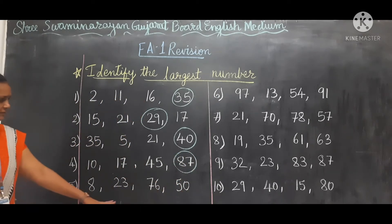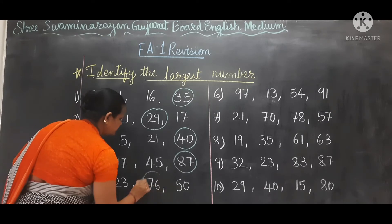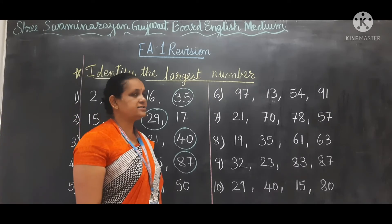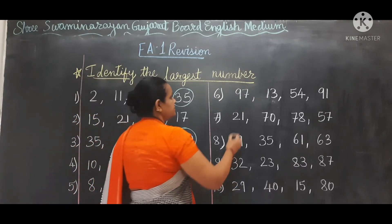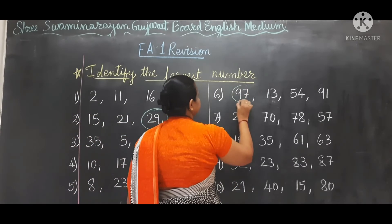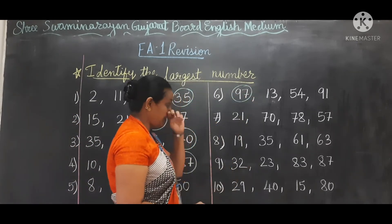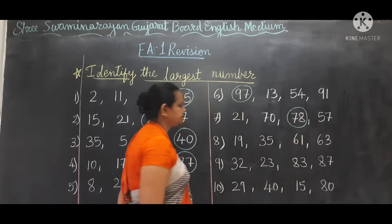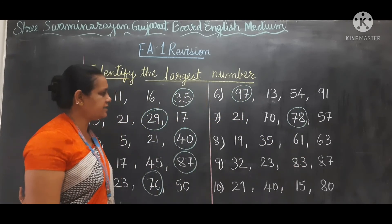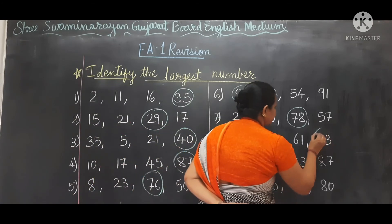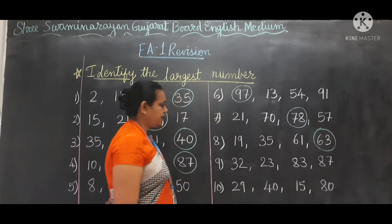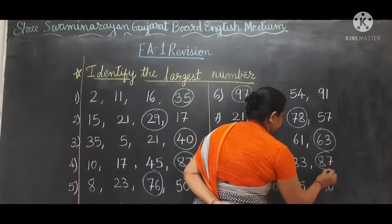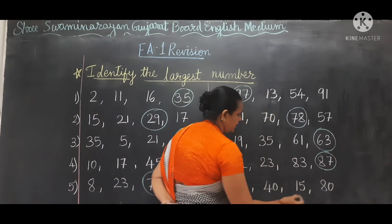Next: 76. In this next, which one is the largest? 97. Next: 78. Next, which one is the largest? 63. Next: 87. And 80.